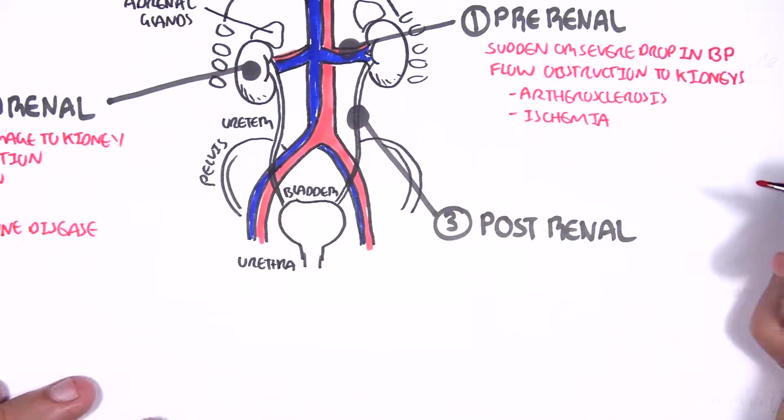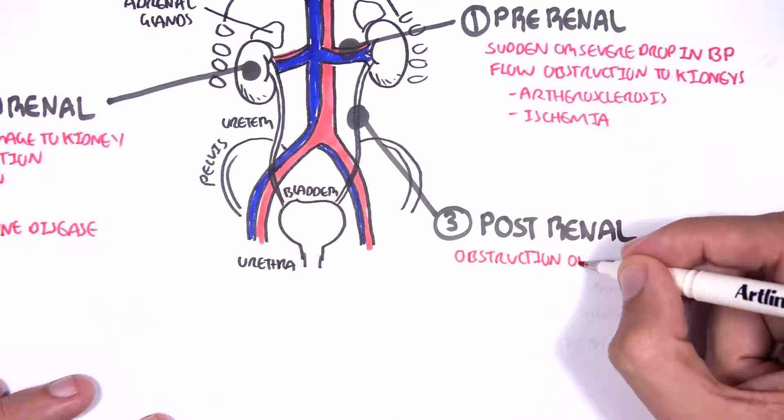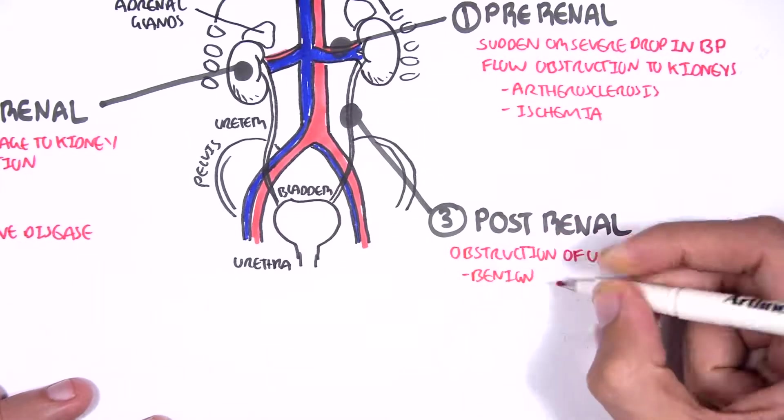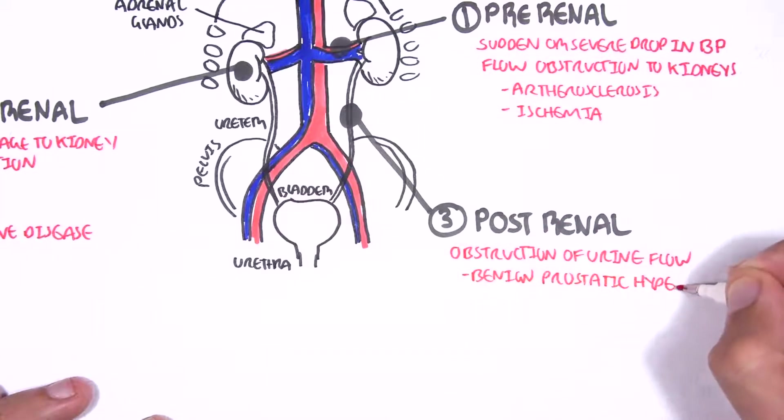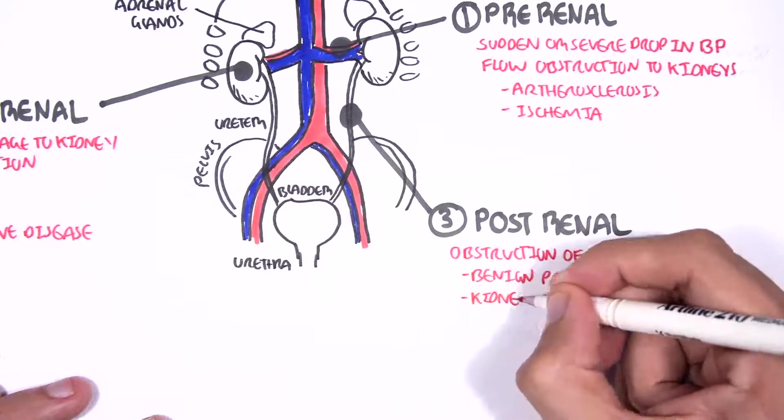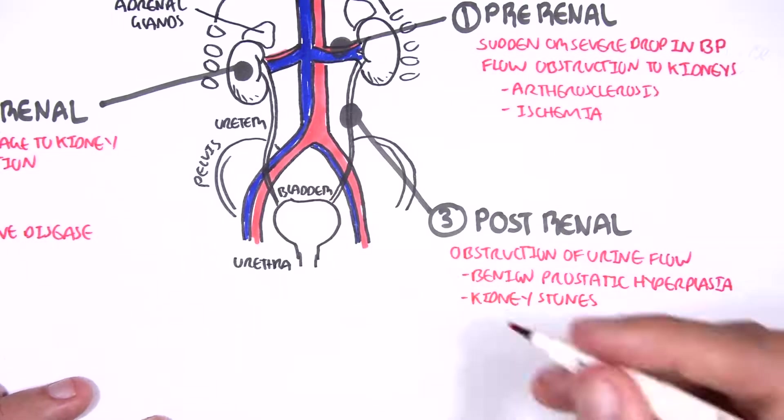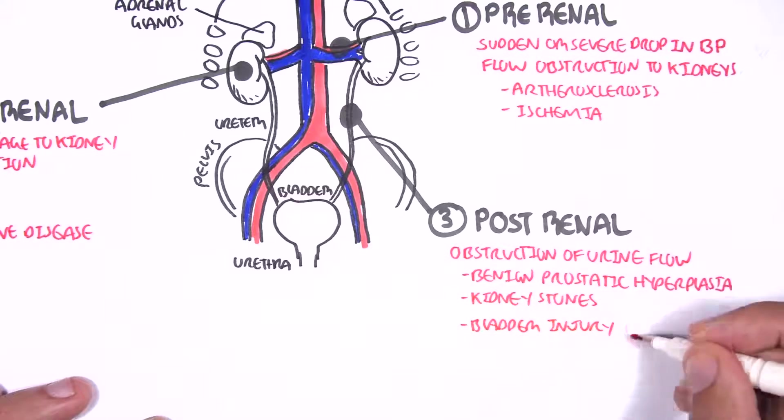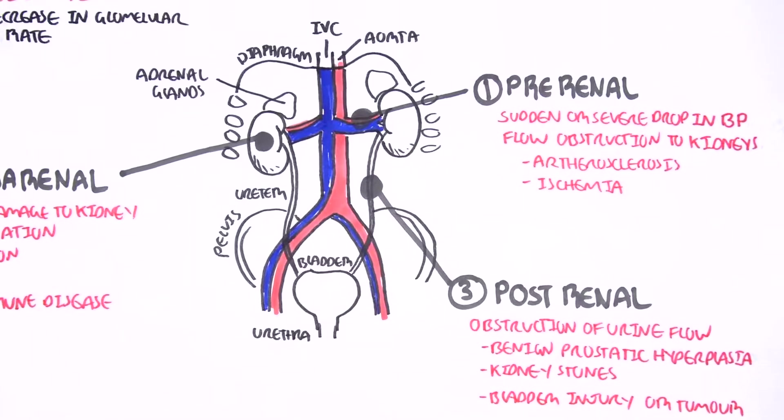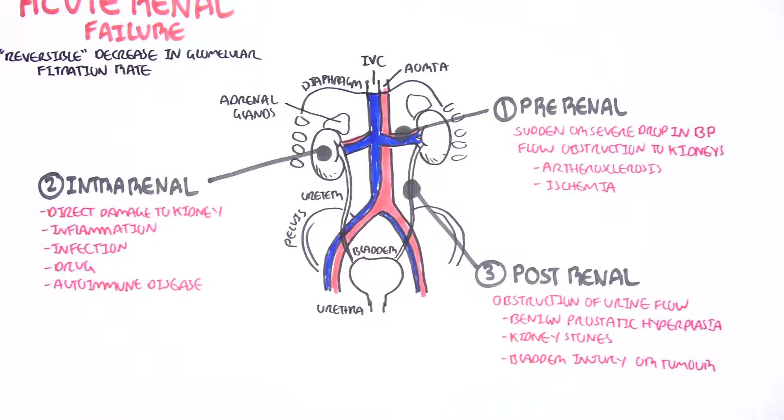The third, the post-renal cause of acute renal failure, includes mainly an obstruction of urine flow. This can be due to benign prostatic hyperplasia, kidney stones, as well as some form of bladder injury or tumor. We will mainly focus on intra-renal, which is the most common form of acute renal failure.